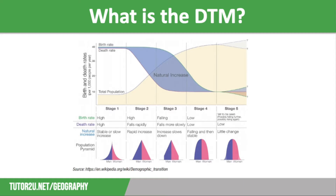However, in Stage 5 there is a natural decrease happening. The total population of a country responds to variations in birth and death rates. It will also be affected by migration — both immigration with people moving in and emigration as people move out — however, this is not shown on the DTM.